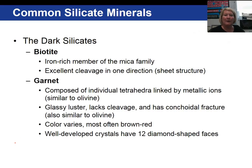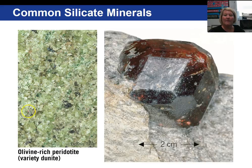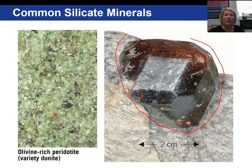Biotite mica is another dark silicate with excellent cleavage in one direction. Garnet is a simple ferromagnesium mineral composed of individual silicon-oxygen tetrahedra with iron and or magnesium attached. It lacks cleavage — it fractures instead — and comes in a variety of colors. Well-developed crystals have 12 diamond-shaped faces. This image shows olivine; the green mineral is olivine, and this is a beautiful example of a garnet showing its 12 faces.